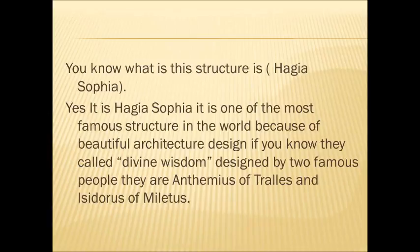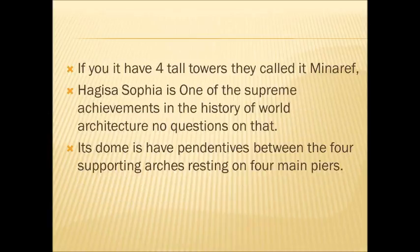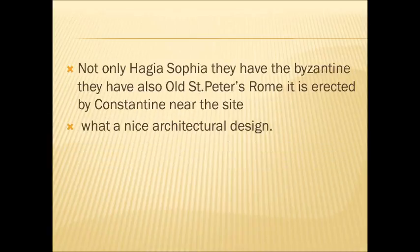When you see this picture, do you know what this architecture is? Yes, it is Hagia Sophia — one of the most famous structures in the world. It has a beautiful architectural design. They call it 'divine wisdom.' It was designed by two famous architects: Anthemius of Tralles and Isidore of Miletus. It has four tall towers called minarets. Hagia Sophia is one of the supreme achievements in the history of world architecture, no question about that. Its dome has pendentives between the four supporting arches, resting on four main piers.